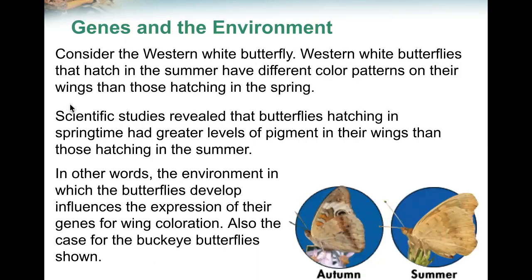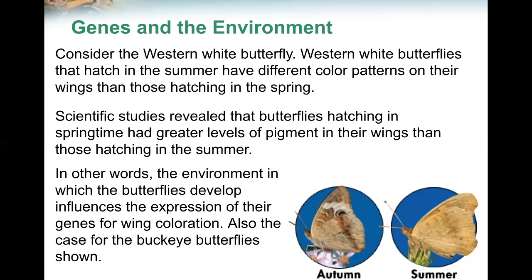Consider the western white butterfly. Western white butterflies that hatch in the summer have different color patterns on their wings than those hatching in the spring. Scientific studies reveal that butterflies hatching in the springtime had greater levels of pigment in their wings than those hatching in the summer. In other words, the environment in which the butterfly develops influences the expression of their genes for wing coloration. This is also the case for the buckeye butterfly.